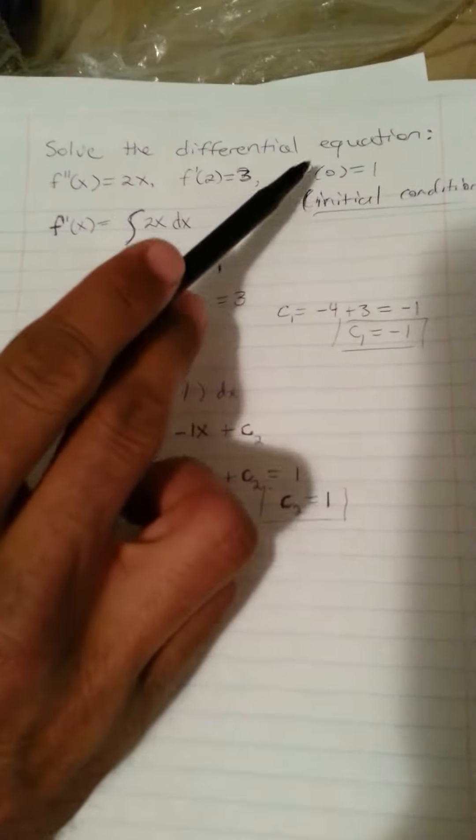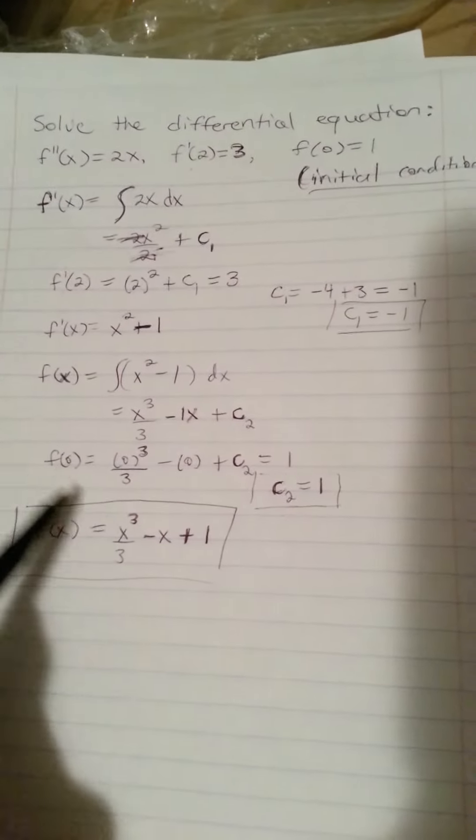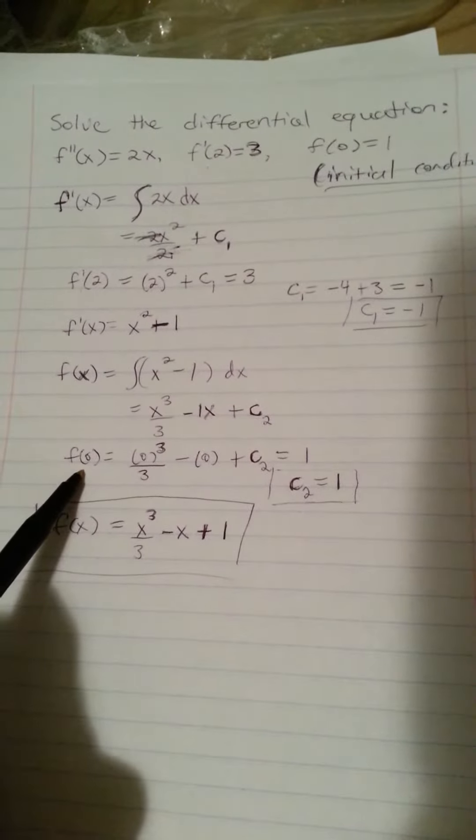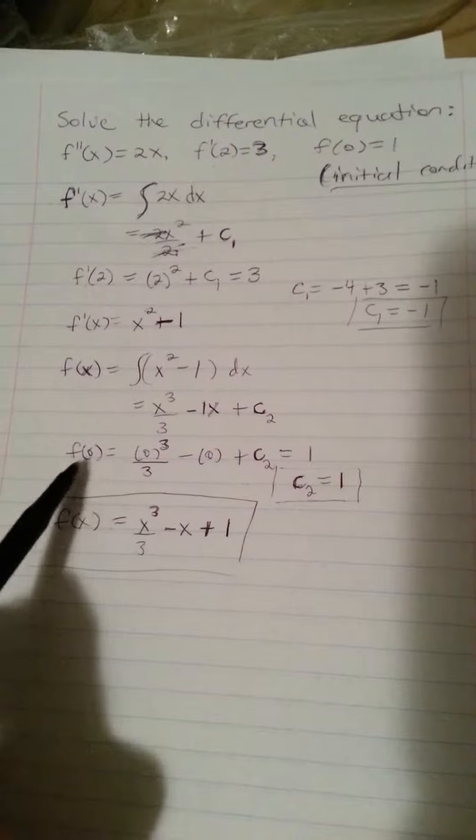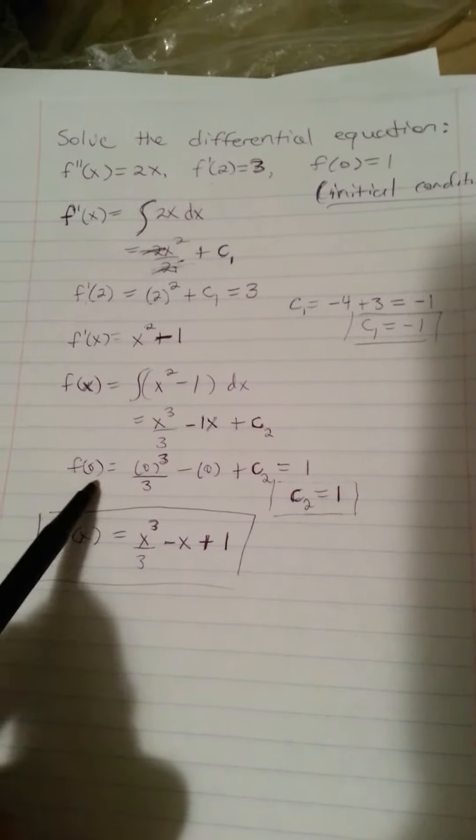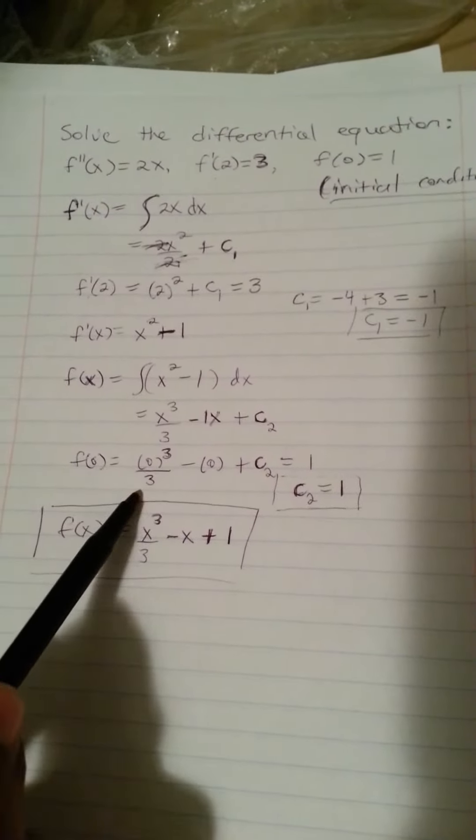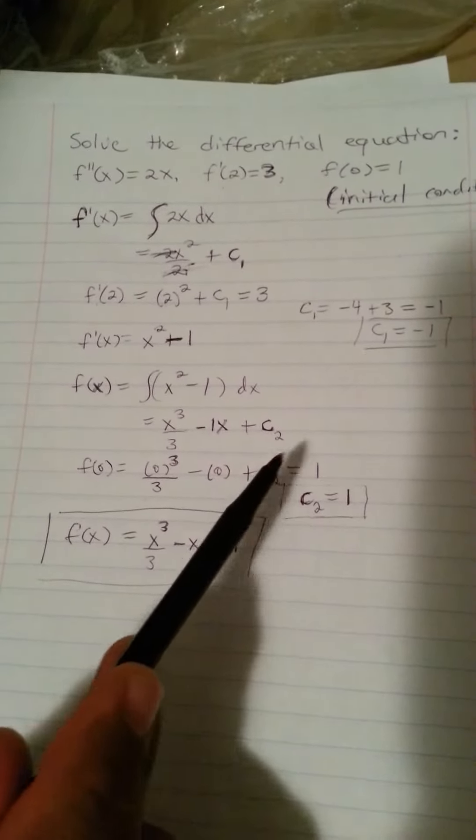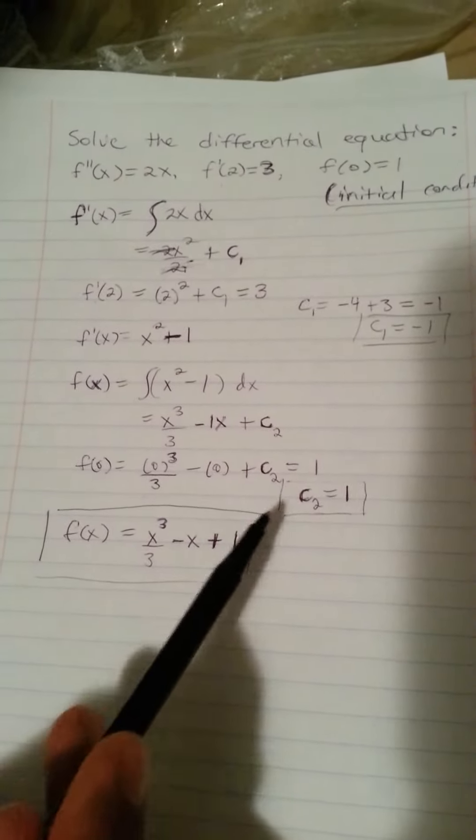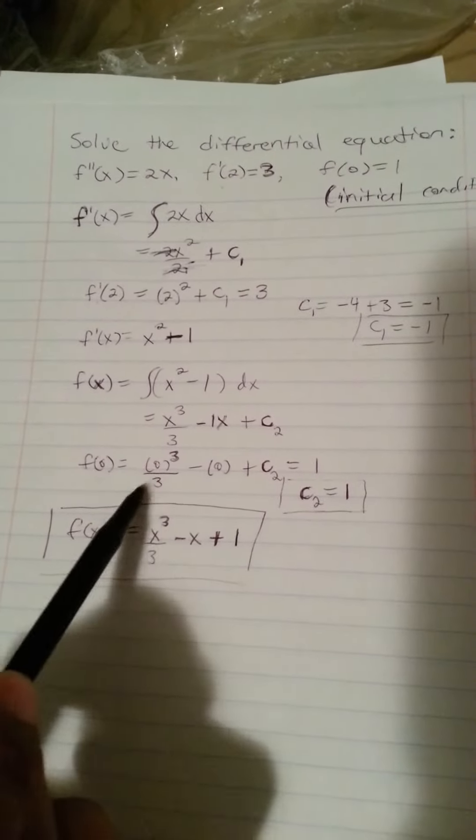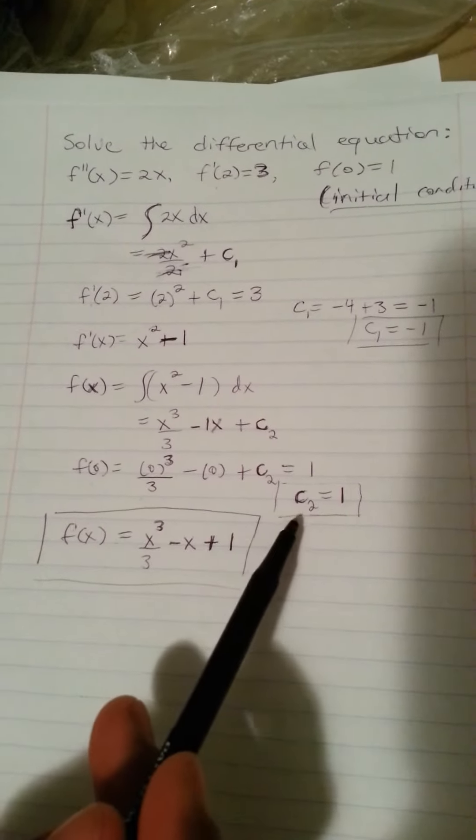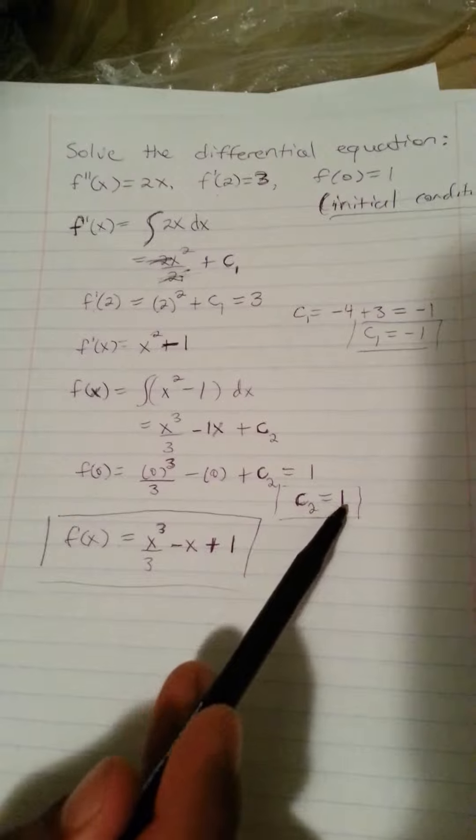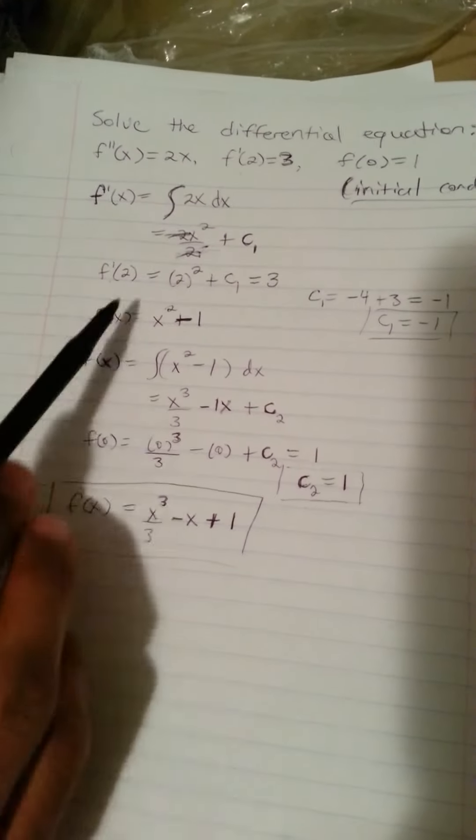So now with this condition where f of 0 is equal to 1, I'll utilize that here, and I'll have plug in 0 for x. So I'll have f of 0 is equal to 0 cubed over 3 minus 0 plus my c sub 2, and set that equal to 1 because of the condition given. Solve this out. These are just 0, 0, and then I end up with c sub 2 is equal to 1.